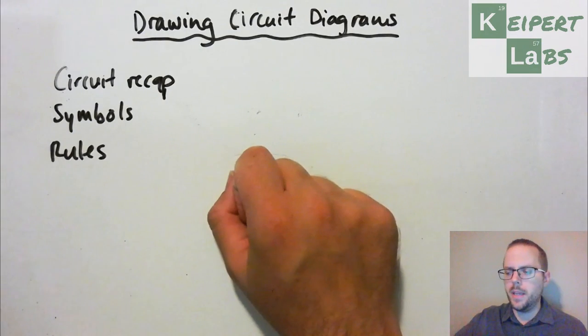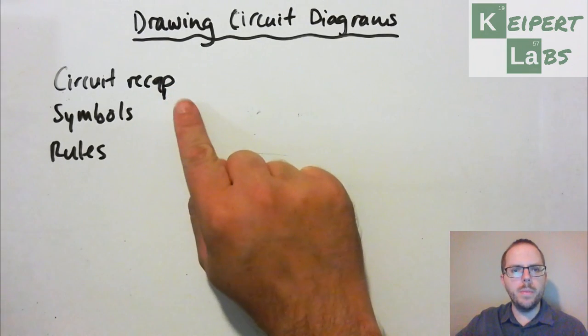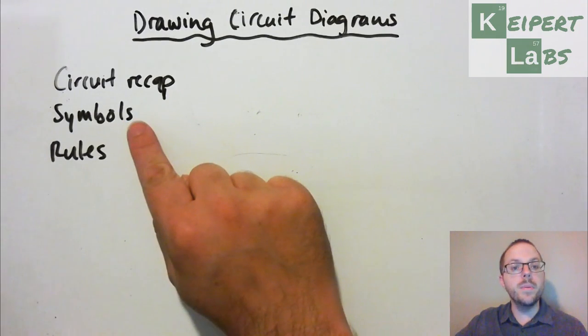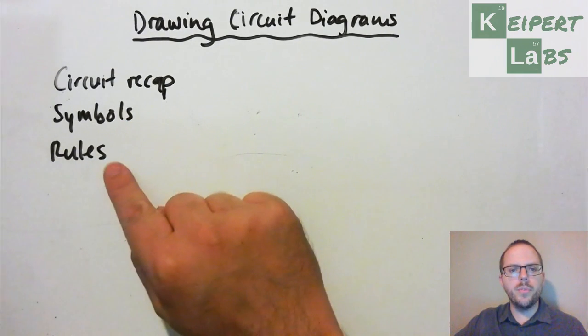In this video, just quickly we're going to go through a bit of a recap about what we mean by an electrical circuit. We're going to go through the concept of symbols that we use when we're drawing a diagram like this. And we're going to go through some of the rules that we use to make our scientific diagrams, our circuit diagrams, accurate and consistent, and also neat and readable.